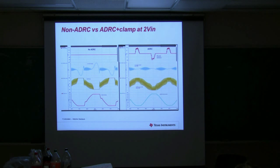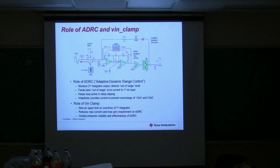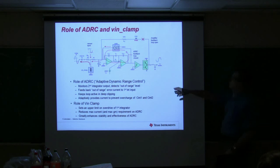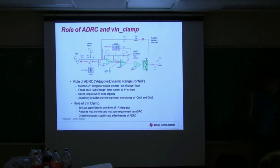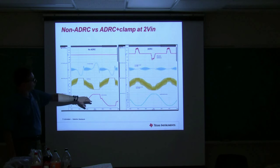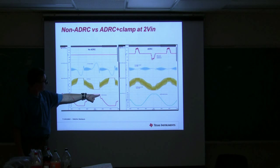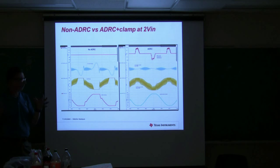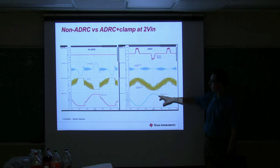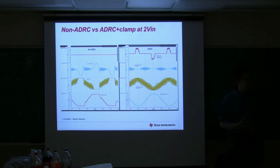One problem with Class D amplifiers is the integrator in the circuit. When you drive the amplifier into clipping, that integrator gets saturated, and it takes a while to recover. This produces a really nasty-looking transient that gives clipping a high-frequency sound. We figured this out a few years ago — we actually clamp the integrator to prevent saturation. After applying that clamping technique, the waveform is much smoother. That's a feature we've been putting in our chips for quite a few years, developed by one of our design engineers.